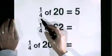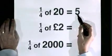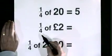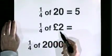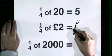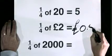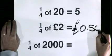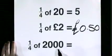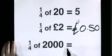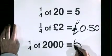A quarter of 20 is 5. A quarter of 2 pounds is no pounds 50. A quarter of 2000 is 500.